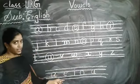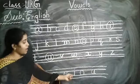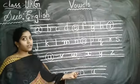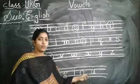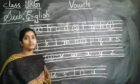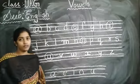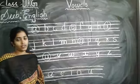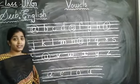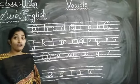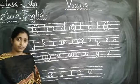A, E, I, O, U. These are what? Vowels. Okay children, practice these letters in your four-year-old book.